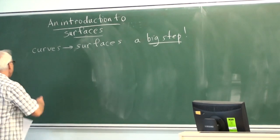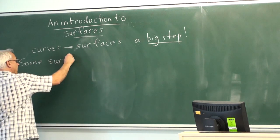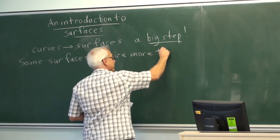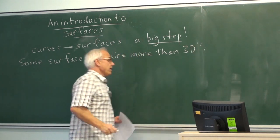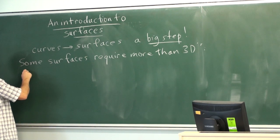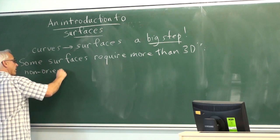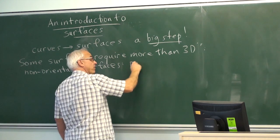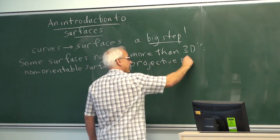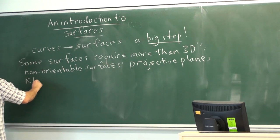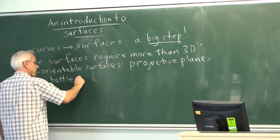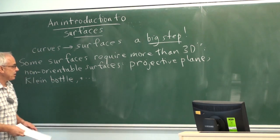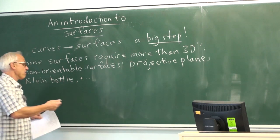We might start by saying that some surfaces require more than three dimensions. In particular, there are these non-orientable surfaces — prominently the projective plane and the Klein bottle. There are others that require us to be living in four dimensions to see them properly. So mostly we're not going to talk too much about this; we're going to stay mostly in 3D.